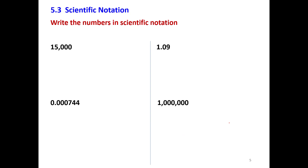Let's complete a few more problems. Number 1: we have 15,000. We want the decimal point right here, because we need the number between 1 and 10. We count how many places we need to move: 1, 2, 3, 4. We move to the right, so it's positive — we know the exponent must be positive because this number is greater than 10. The answer is 1.5 times 10 to the power of 4.